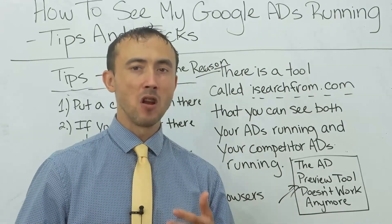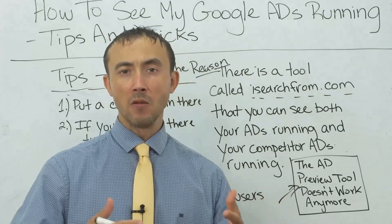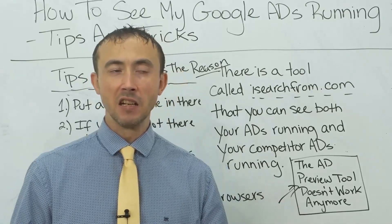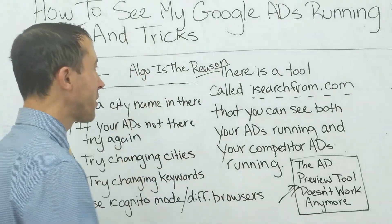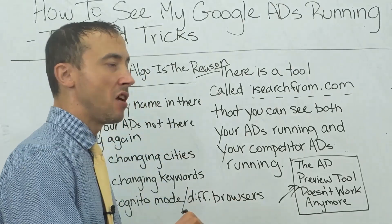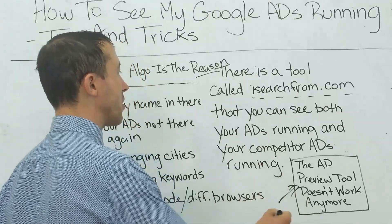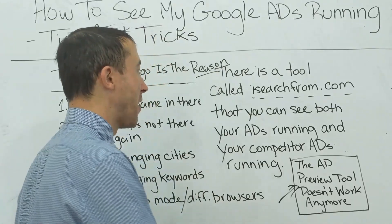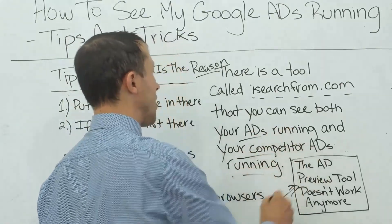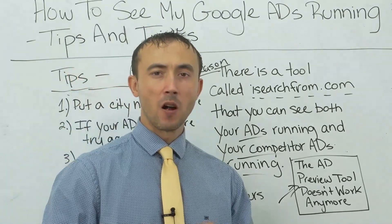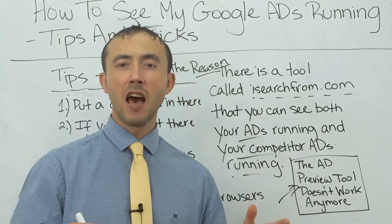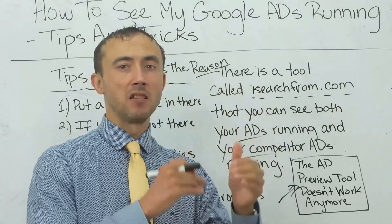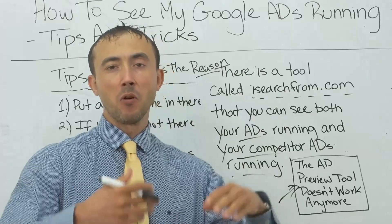There are some things you need to know in order to get it to show correctly — which is why this video doesn't end here. The iSearchFrom tool lets you see what your ad will look like on Google for any keyword you want, and any location you want, whether in the US or another country. You can see both your ads and your competitors' ads. This tool is very useful in our firm, particularly just to see the ad running and how it actually shows up next to the other ads. If our ad stands out, we know we'll get a higher click-through rate and therefore more results.